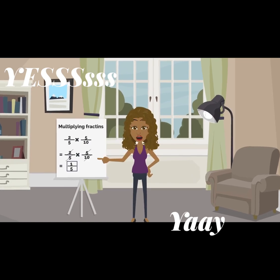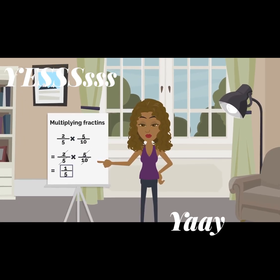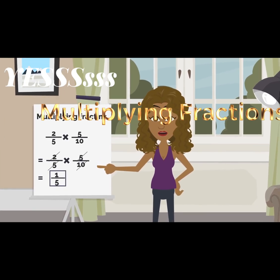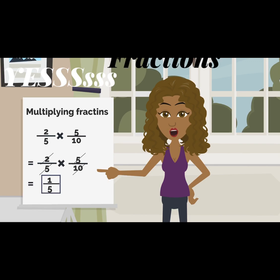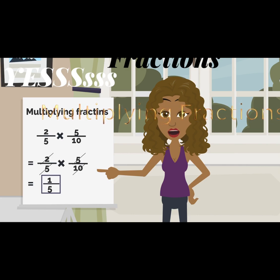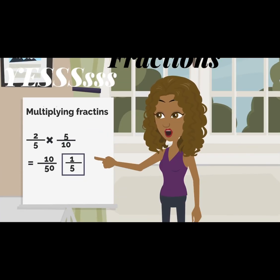2 over 5 times 5 over 10. We're going to find the answer, then we're going to simplify it. We're doing cross-cancelling — that's the first method that I'm going to explain to you.